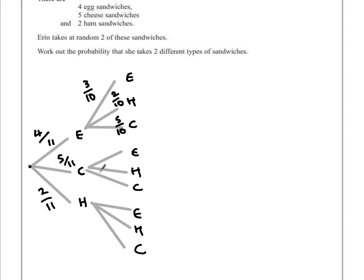On the second branch, if she chose cheese first, there are still going to be four egg sandwiches out of ten. For ham, that's still two out of ten. But for cheese, if one's gone, that would be four out of ten. On our last combinations for ham: four egg sandwiches out of ten, only one ham out of ten, and five cheese out of ten. These are the probabilities for the second event happening.